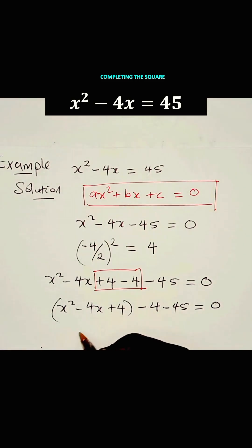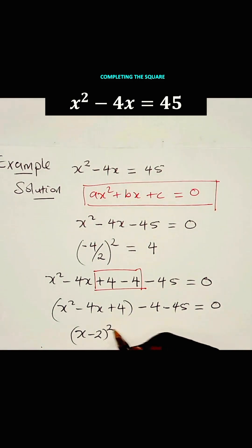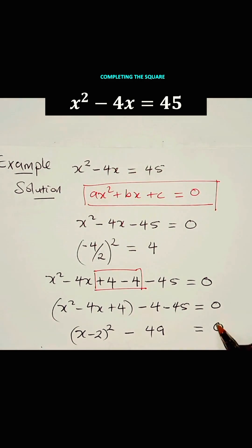Now, we realize this is a perfect square, and this can be written as X minus 2 squared minus 49. That gives us 0.